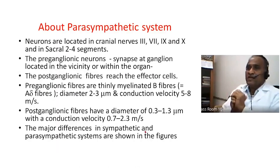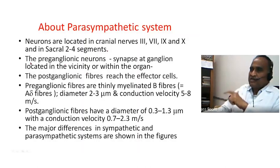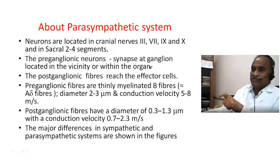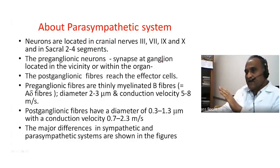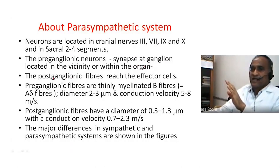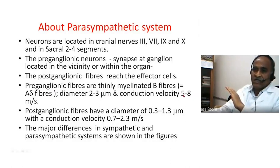The parasympathetic system is located in cranial nerves and sacral segments. The cranial nerves are the third, seventh, ninth, and tenth. The parasympathetic sacral segments are second to fourth. The synapse is at a ganglion located in the vicinity of or within the organ — meaning preganglionic neurons are longer, reaching the ganglion near the organ, while postganglionic fibers reach the effector cells. Preganglionic fibers are myelinated B fibers equal to A-delta fibers, diameter around 2–3 micrometers, conduction velocity 5–8 meters per second. Postganglionic fibers are unmyelinated, conduction velocity 0.7–2.3 meters per second.